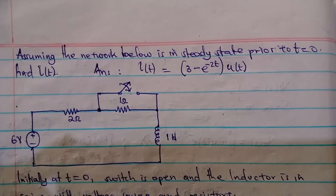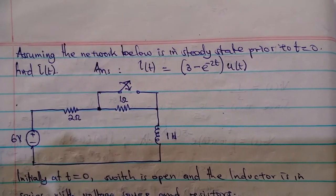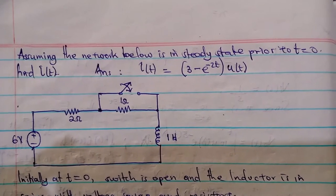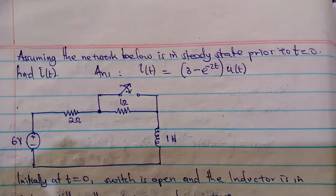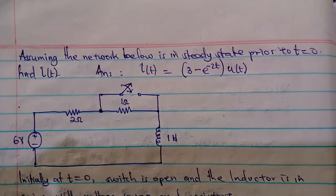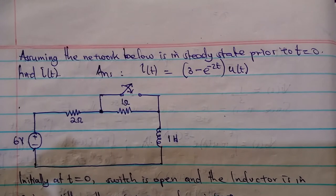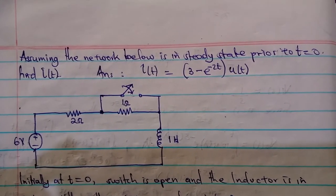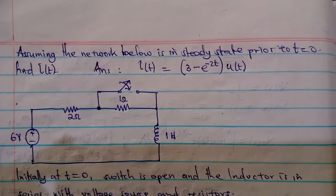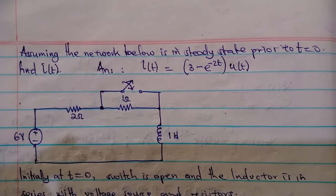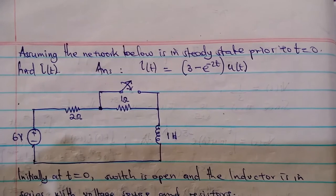Today we are going to do this example together, following step by step, to understand how we can go about transient circuit analysis. The example states: assuming the network below is in steady state prior to time t equals zero, find the current at any time t as the circuit is responding. Above is the answer we are going to work towards.